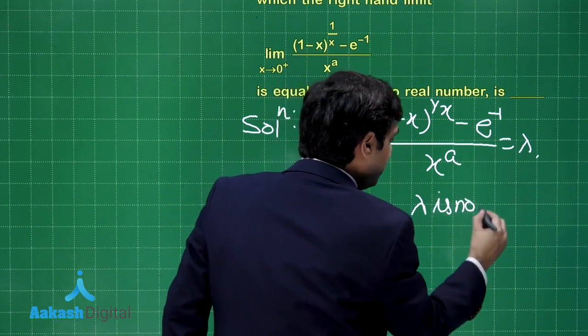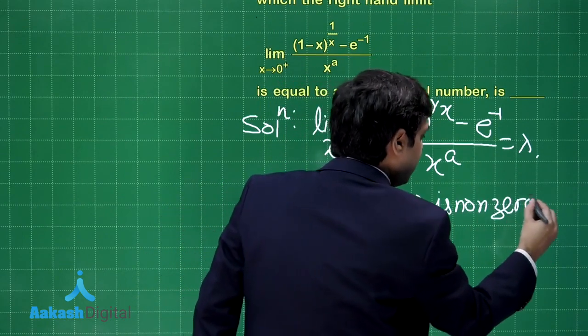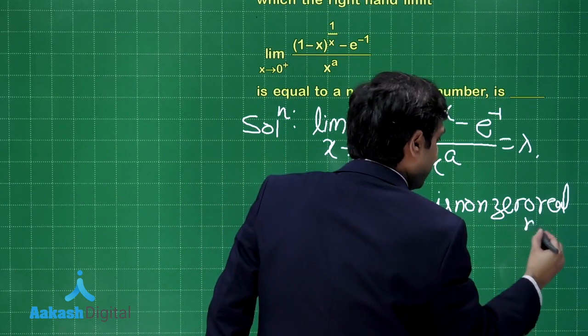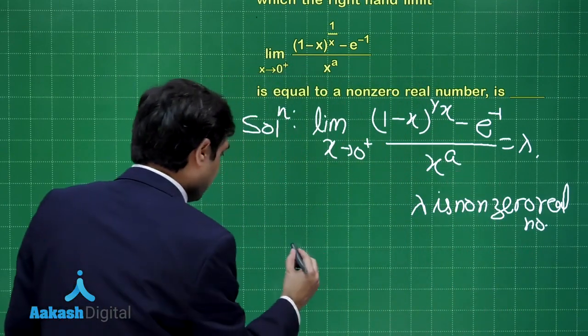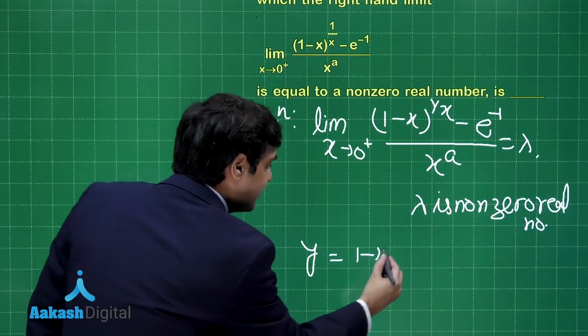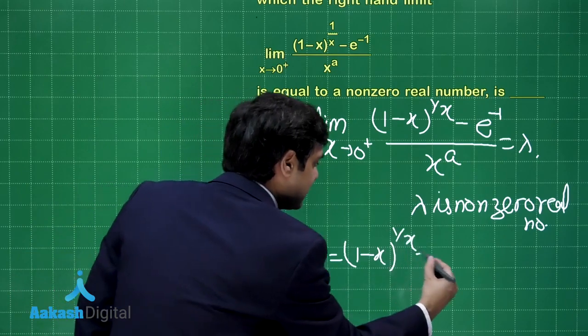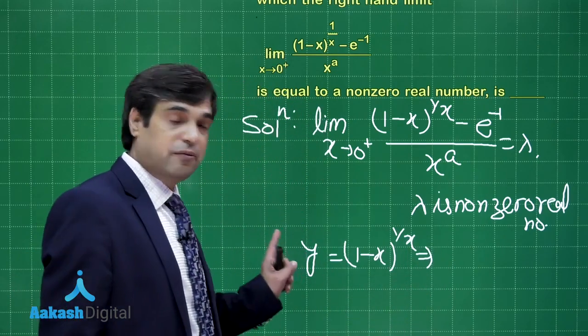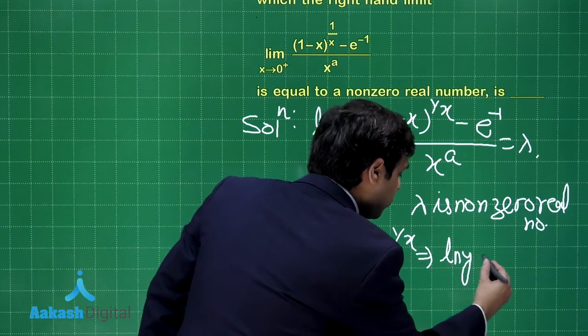Let us say is equal to lambda where lambda is non-zero real number as I am assuming. Lambda is non-zero real number.